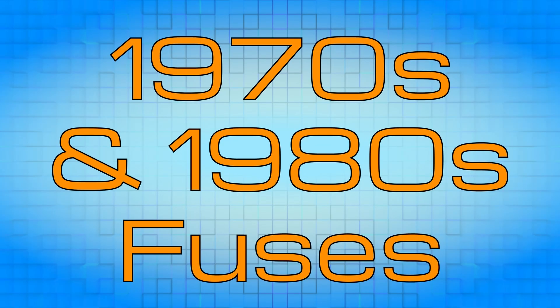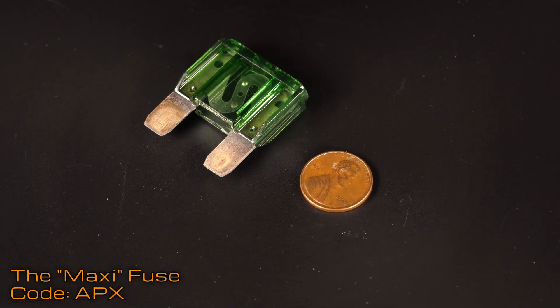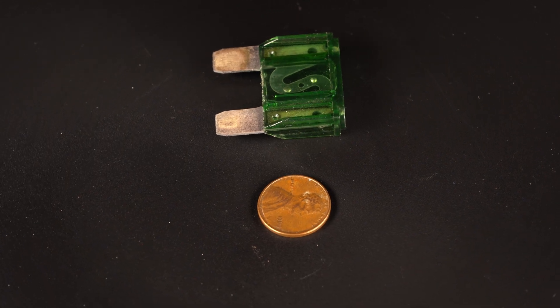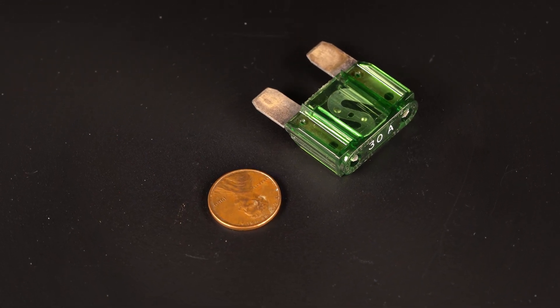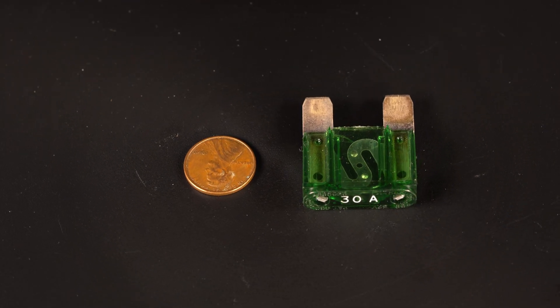In the 1970s, bladed fuses started appearing in vehicle fuse boxes. This new design still protected circuits with the same strip of metal design, but allowed many more fuses to fit in the fuse box. Since their shell was made out of plastic, they could be color-coded for quick identification based on amperage.